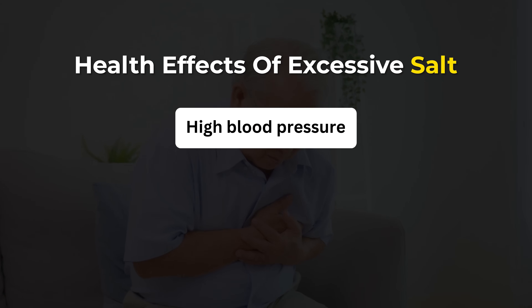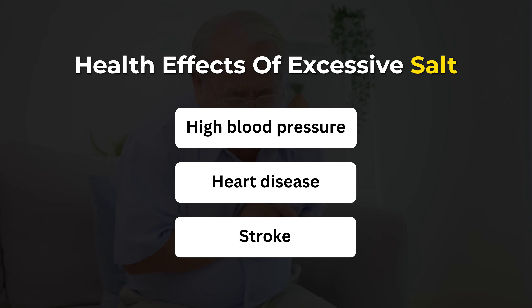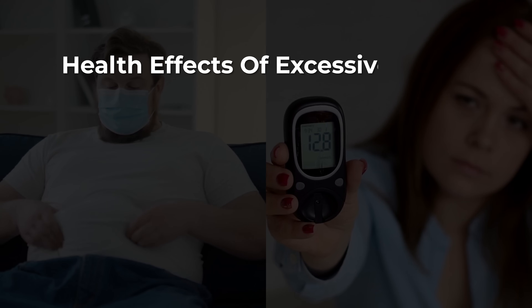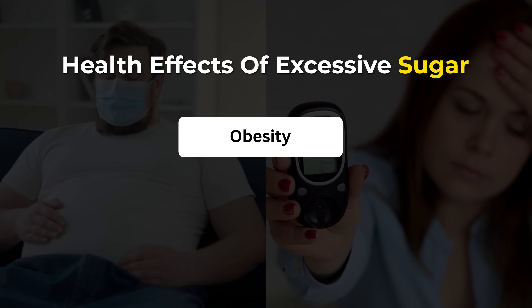You'd have to be living under a rock not to have heard about the very bad health effects of eating large amounts of sugar and salt. Take salt, for instance — we've seen it lead to higher blood pressure, heart disease, and stroke, which are the number one killers of adults at least in the US. Sugar is really no better, but it tends to lead to different diseases: you're more likely to become obese or develop diabetes.